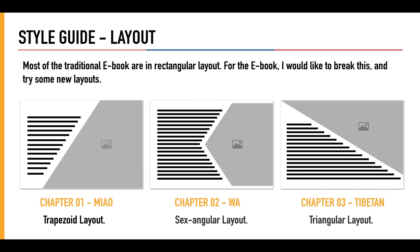For the layout, as is well known, most traditional ebooks are in rectangular layout. For this ebook, I would like to break that convention and try some new layouts. For chapter 1, I mainly use the trapezoid layout. For chapter 2, I mainly use the sextangular layout. And for chapter 3, I mainly use the triangular layout.